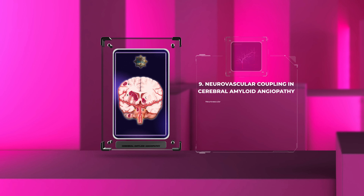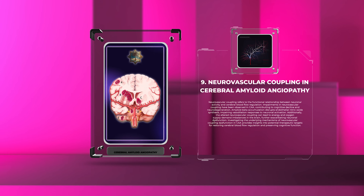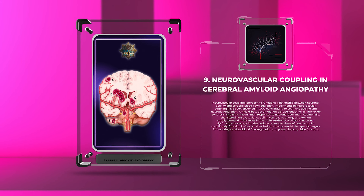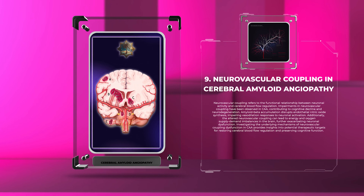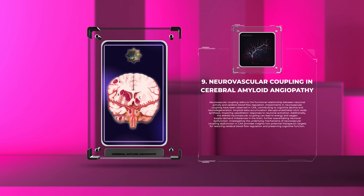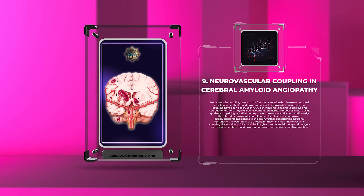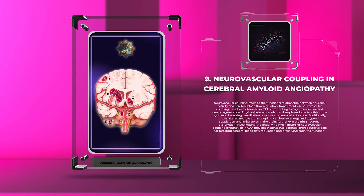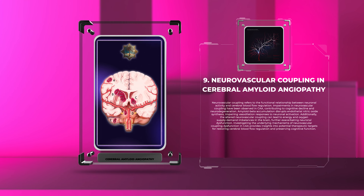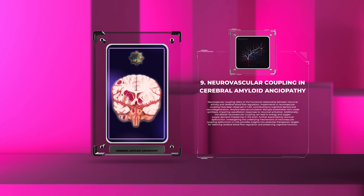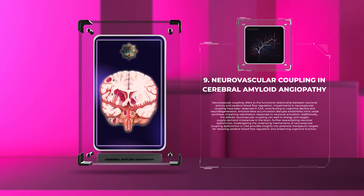Neurovascular coupling refers to the functional relationship between neuronal activity and cerebral blood flow regulation. Impairments in neurovascular coupling have been observed in CAA, contributing to cognitive decline and neurodegeneration. Amyloid beta accumulation disrupts endothelial nitric oxide synthesis, impairing vasodilation responses to neuronal activation. Additionally, the altered neurovascular coupling can lead to energy and oxygen supply-demand imbalances in the brain, further exacerbating neuronal dysfunction. Investigating the underlying mechanisms provides insights into potential therapeutic targets for restoring cerebral blood flow regulation and preserving cognitive function.